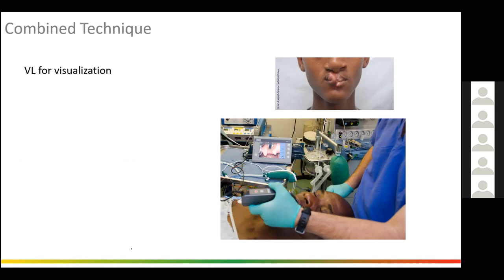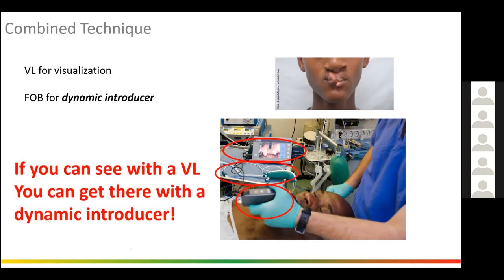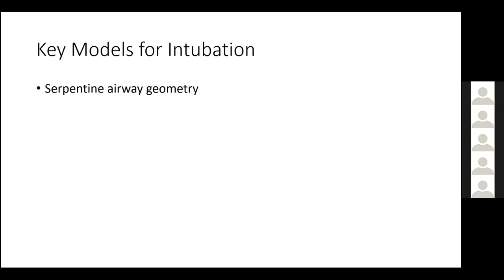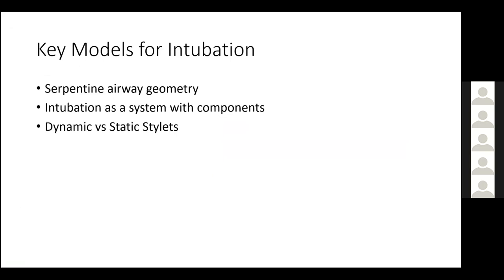That's really where I got started on trying to develop a purpose-built dynamic stylet instead of cross-purposing fiber optic bronchoscopes. VL for visualization combined with fiber optic bronch as a dynamic introducer — this is called combined technique. I was not the first nor the only one to start using this, but it was an era where a whole bunch of people were discovering it all at once. Key models we'll cover include serpentine airway geometry, intubation as a system with different components, dynamic stylets versus static stylets, and combined techniques.